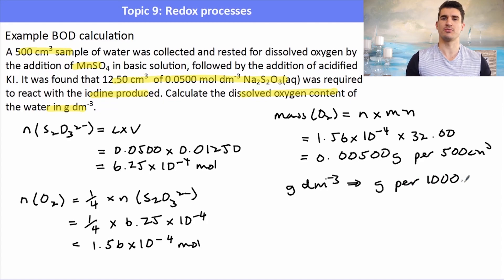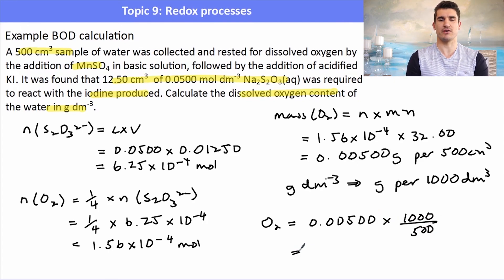So my number of moles of oxygen will be 0.005 times 1000 over 500. Because we want 1000 centimeters cubed, we had 500. So it's just like multiplying it by 2, which gives us our mass of oxygen in 1 decimeter cubed.